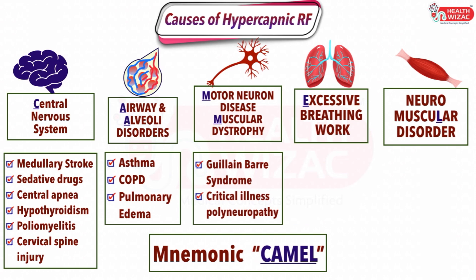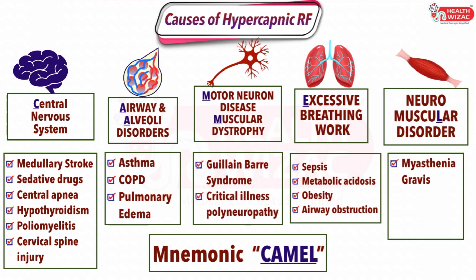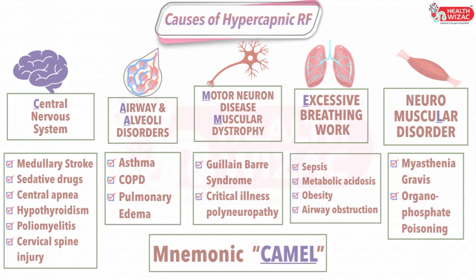Excessive work of breathing is present in conditions like sepsis, metabolic acidosis, obesity, and airway obstruction. Neuromuscular disorders include conditions like myasthenia gravis and organophosphate poisoning.